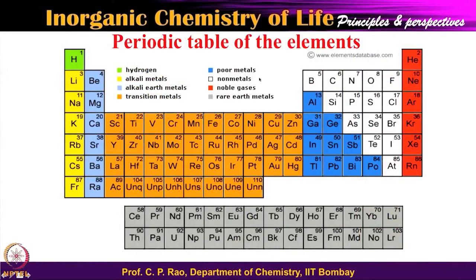Now the question comes: for a chemist, the tool is the periodic table, and everyone knows the periodic table of elements, which is introduced as early as 9th or 10th standard in high school. You have a large number of boxes on the left side, in the center, on the right side, and at the bottom. When you have elements spread all over, is it true that all of these elements are important in life, or only certain elements are important? This needs to be understood, and we will certainly understand this in the next few slides.